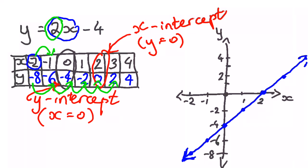Let's look at our significant points. This point here is my x-intercept, found from where y equals 0. This point here is my y-intercept, which I found when x equals 0. In some questions you might be asked just to find the intercepts — and that's what they are.